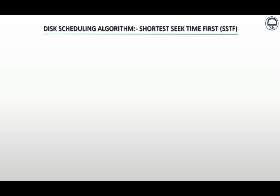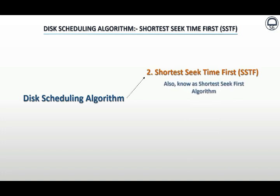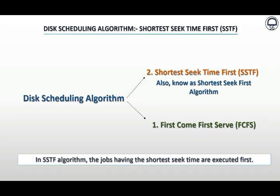The Shortest Seek Time First is commonly abbreviated as SSTF, it is also popularly known as the Shortest Seek First algorithm. This is the second algorithm in disk scheduling algorithm learning and it is also one of the most famous disk scheduling algorithms, like FCFS, that is First-Come-First-Serve. In the SSTF algorithm, the jobs having the shortest seek time are executed first.